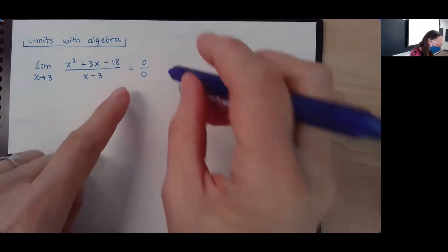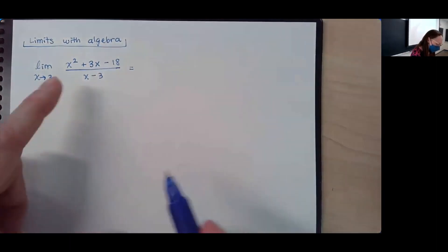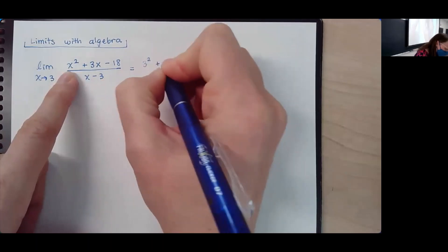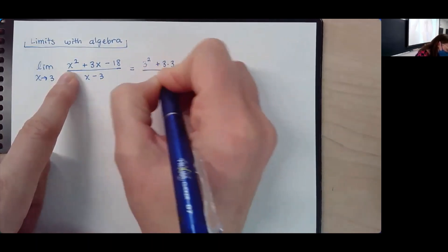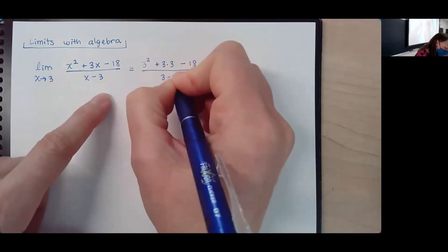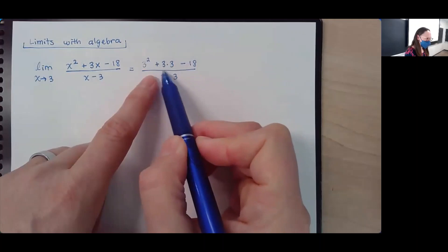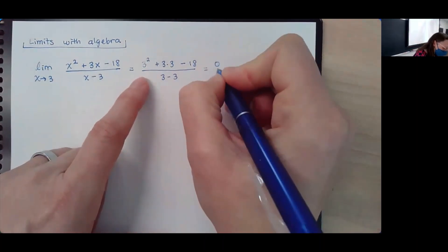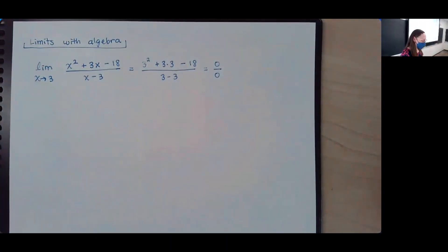Why is it 0? I'll go ahead and actually show the plugging in part on the top. When I plug in 3, I've got 3 squared plus 3 times 3 minus 18, all over 3 minus 3. So on top I've got 9 plus 9, which gives me 18, and then minus 18, I'm back to 0. So 0 over 0, from a calculus perspective, says go do some algebra.